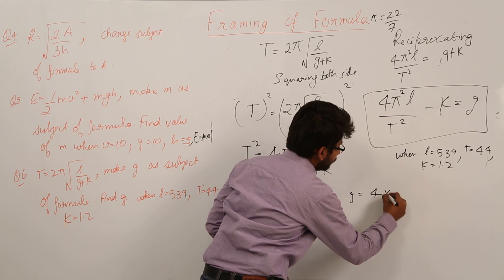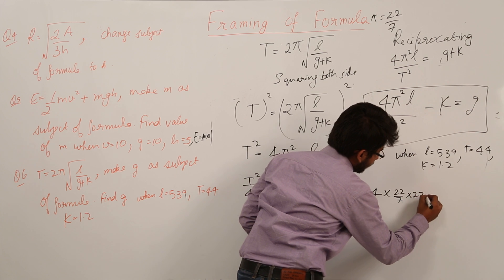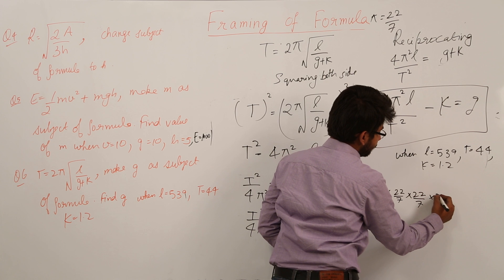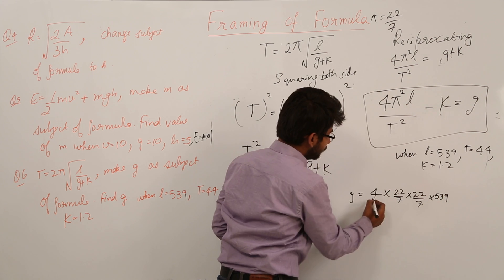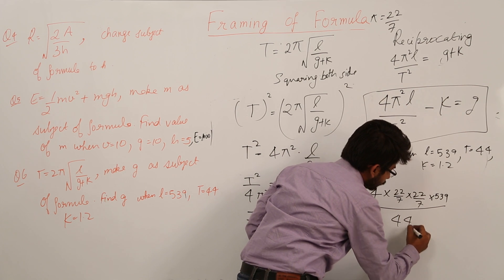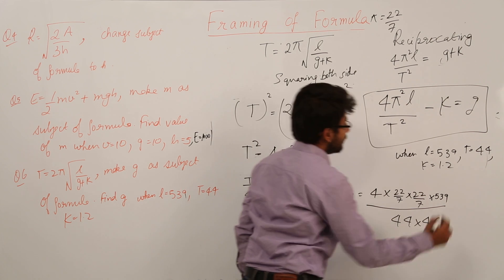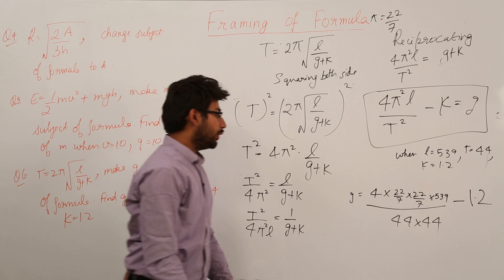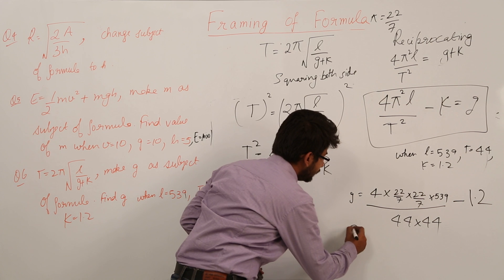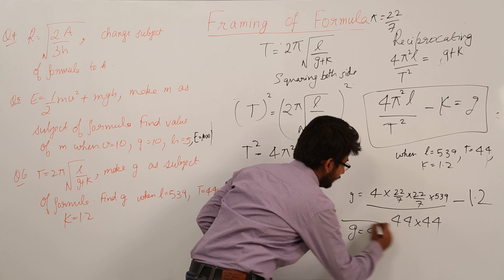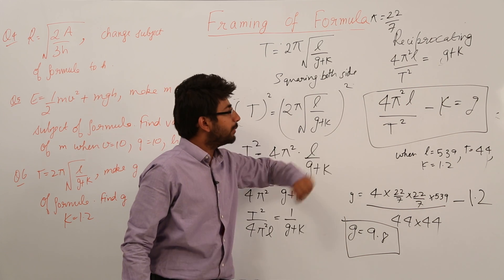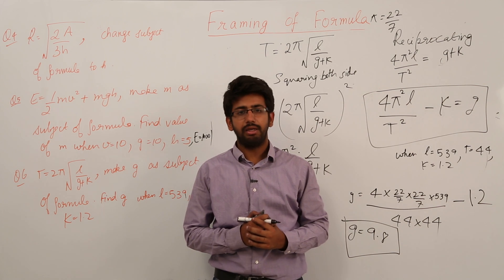Substituting the values: g equals 4 times π squared (which is 22/7 times 22/7) times 539, divided by t squared (44 times 44), minus k which is 1.2. When you solve this equation, you get g equals 9.8. So the answer to the second part is g equals 9.8, and the first part gives g as the subject of the formula.